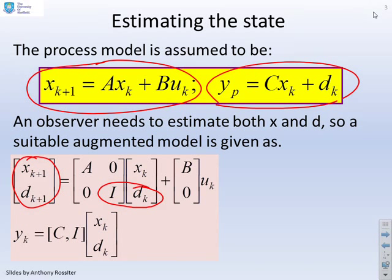But that's a fairly typical model. And then you'll see the top row basically gives us AX plus BU. The output depends upon both the X and the D. So that's a simple augmented model.